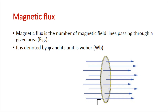The next concept is magnetic flux. Magnetic flux is denoted by φ and its unit is Weber. Magnetic flux is defined as the number of magnetic field lines passing through a given area. So, for any given area, the count of magnetic field lines passing through it is the magnetic flux.